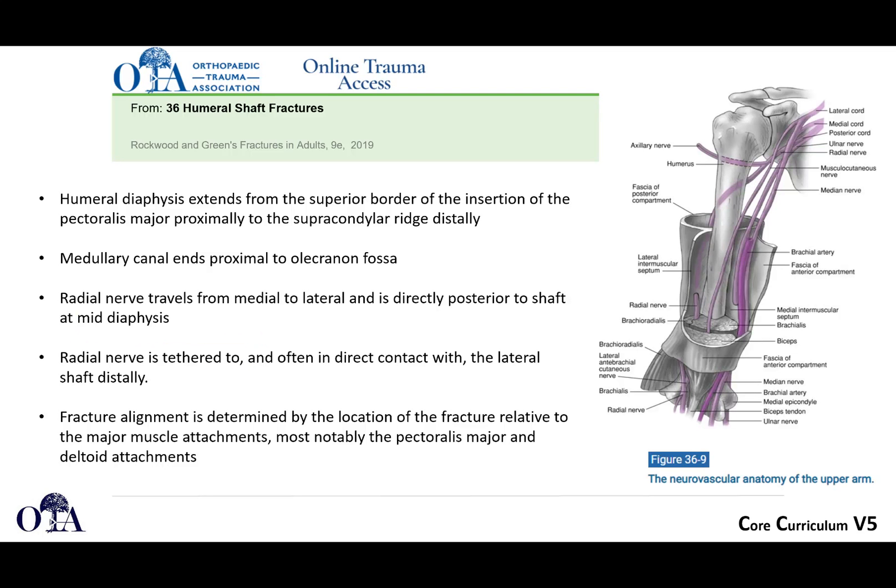The anatomy is very important to review, especially your radial nerve course, as it will be very important whether you're doing open approaches or even intramedullary nailing. It's really important to understand where exactly the radial nerve is depending on where you're working. Another important thing is that the medullary canal ends proximal to the olecranon fossa, well above the joint line.